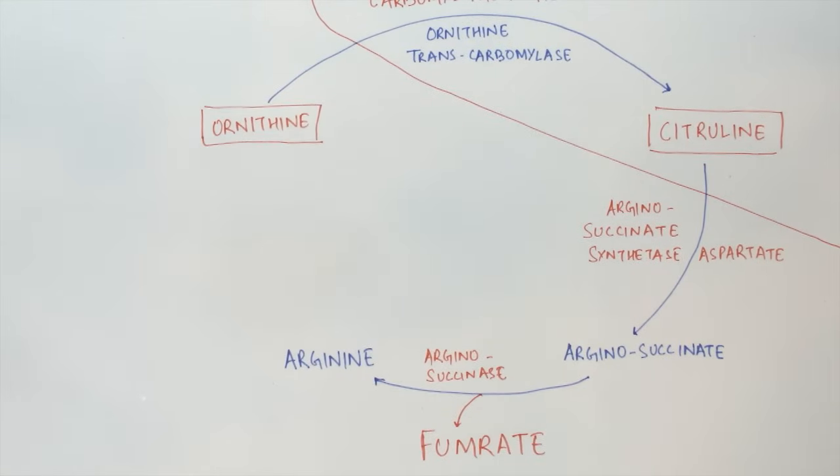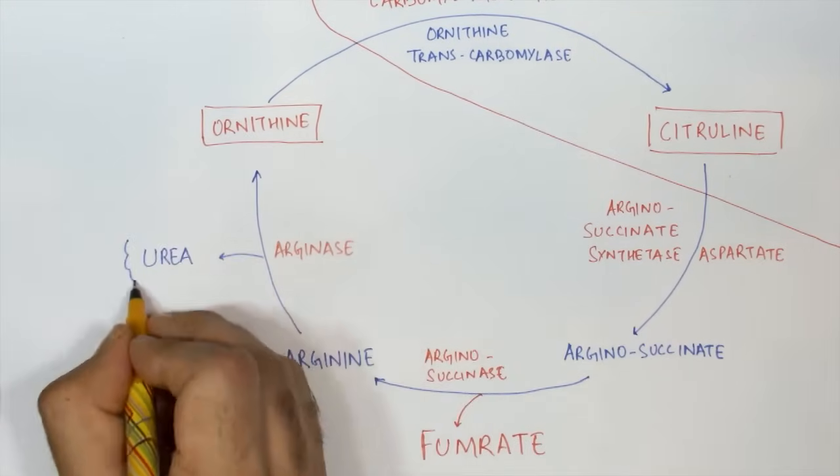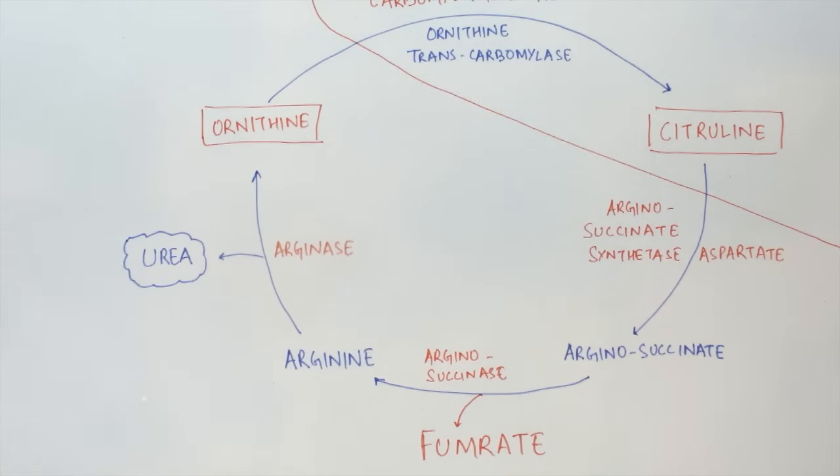In the last step of the urea cycle, the enzyme arginase acts on arginine and lyses it to produce urea and ornithine. The ornithine is utilized back into the urea cycle, whereas urea is a soluble compound that dissolves into the blood and is transported to the kidneys to be excreted in the form of urine.